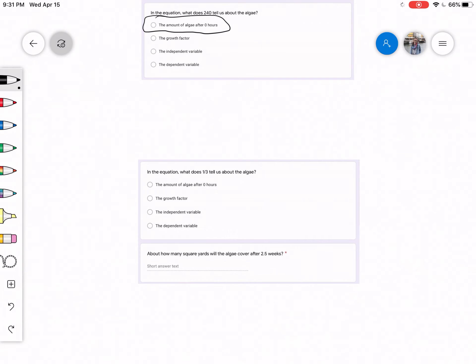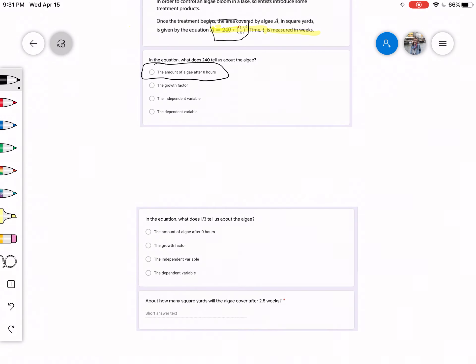The next problem we have is, in the equation, what does one-third tell us about the algae? So that one-third took the place of B, which is our growth factor.